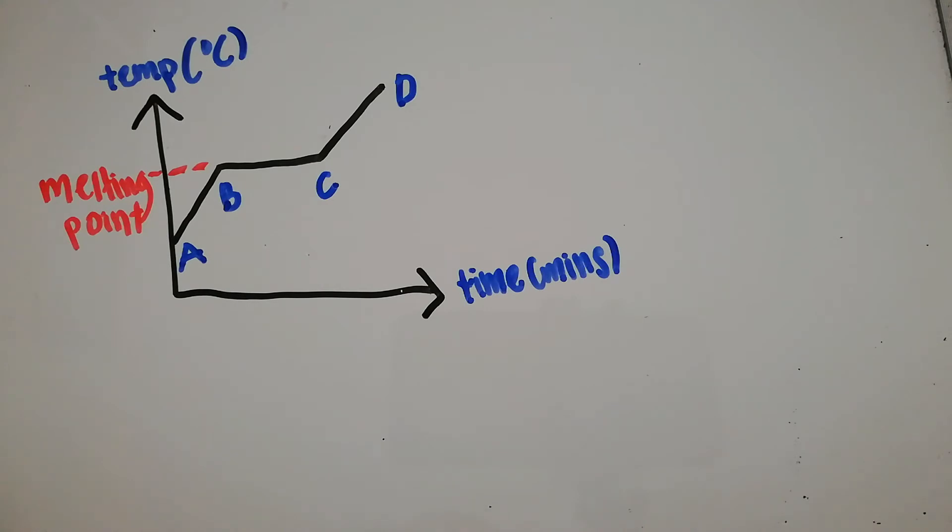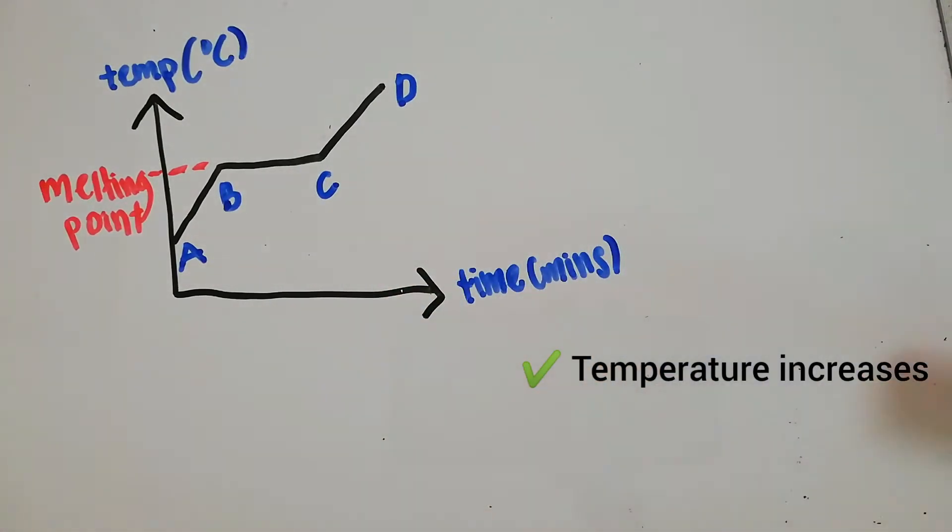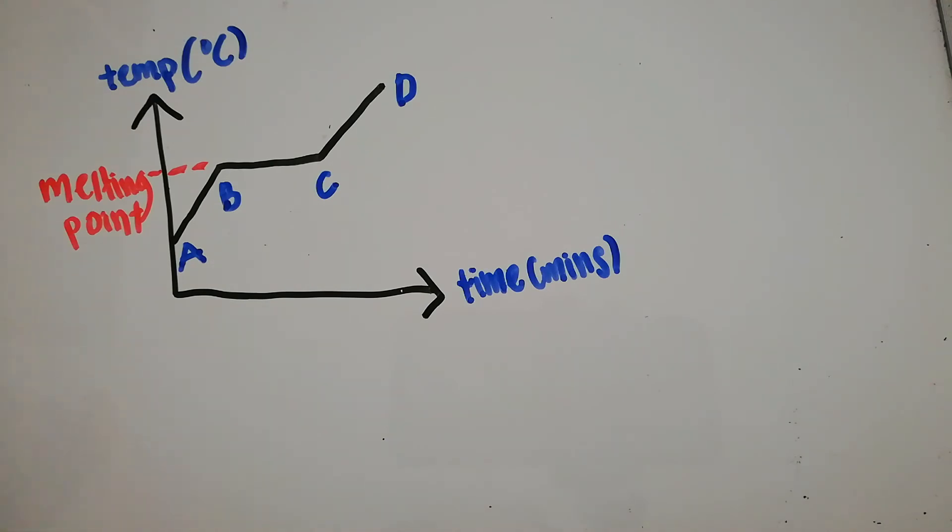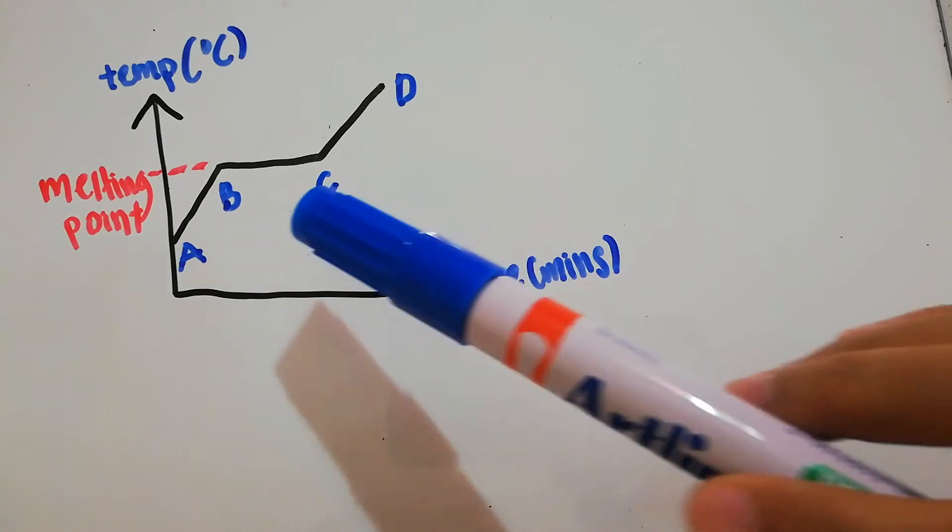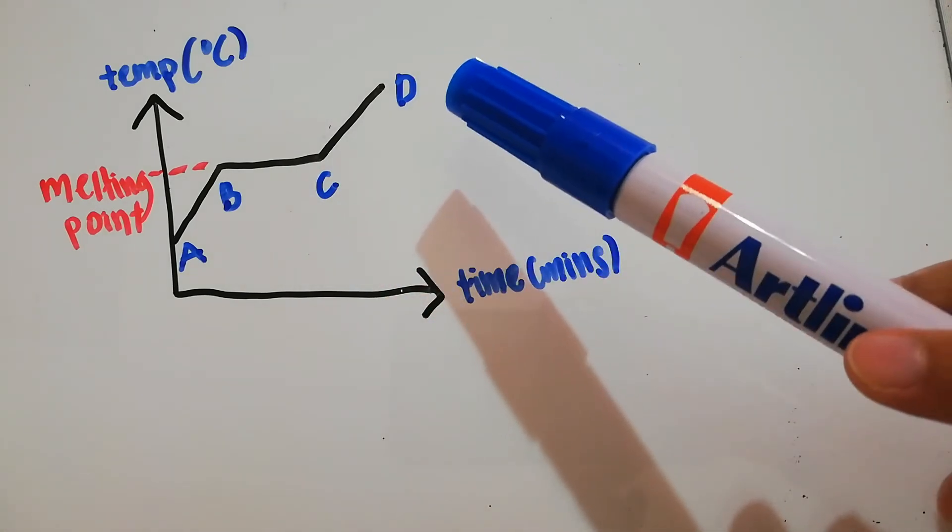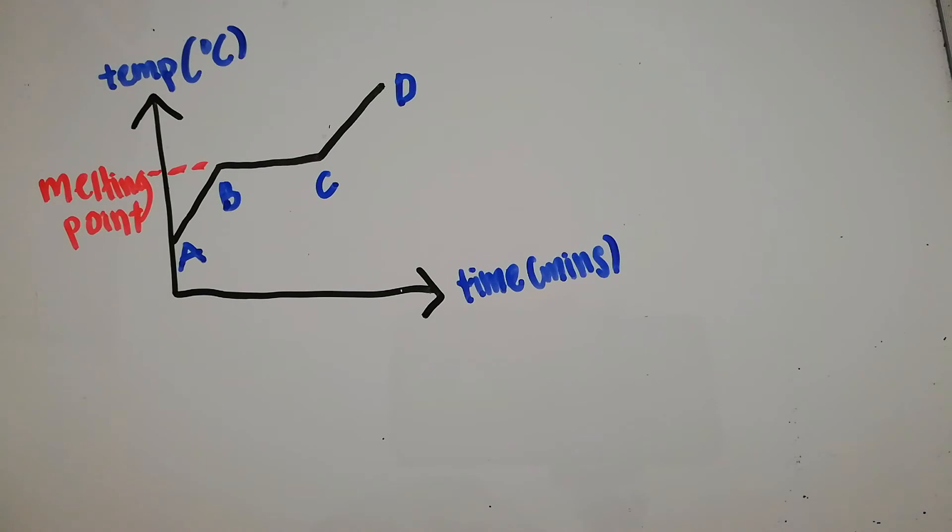The last one is point C to D. We can see the temperature increases as time increases. At this point, it exists in liquid state. When heated, the particles absorb heat and move faster because the arrangement of liquid is separated but not closely packed like solid. That's why the particles move faster compared to point A to B.